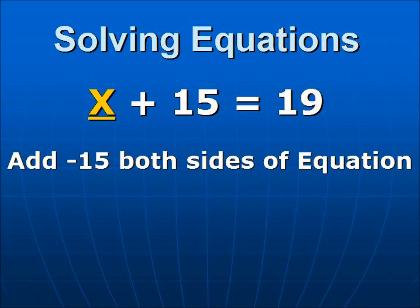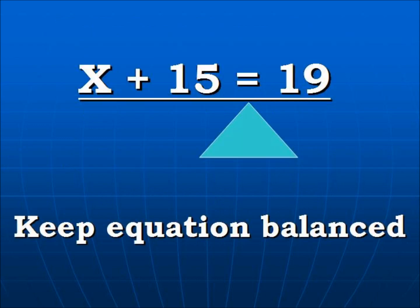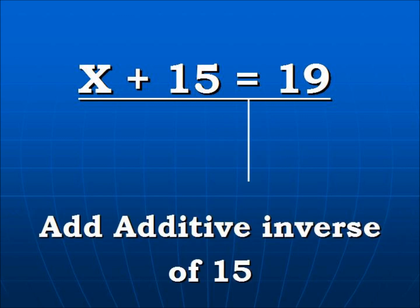We're going to add negative 15 to both sides of the equation. By adding negative 15 to both sides the equation will stay balanced. Here's our work chart. We're going to add the additive inverse of 15 which is negative 15. We're going to add it to both sides.